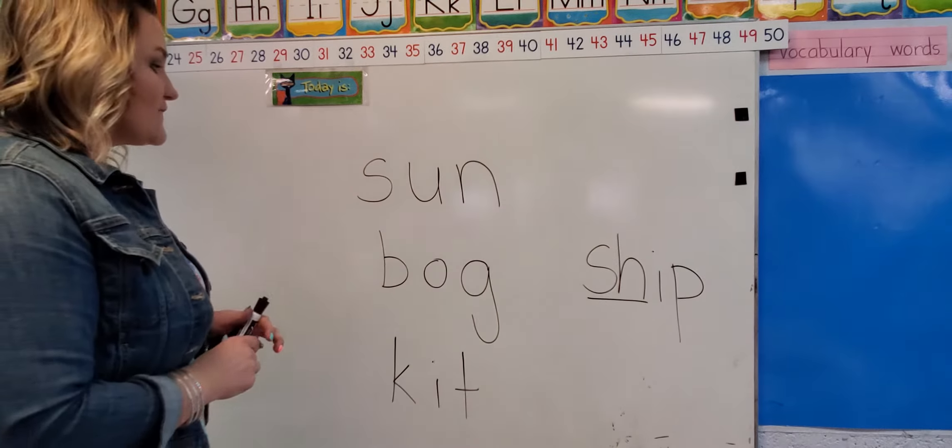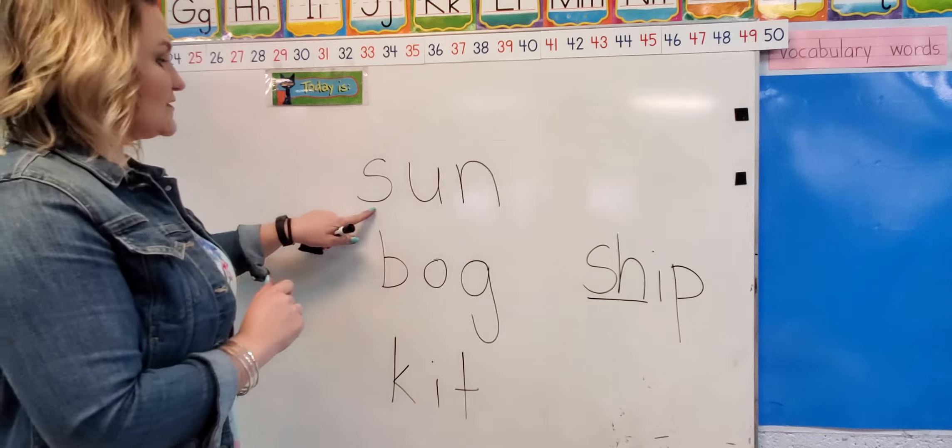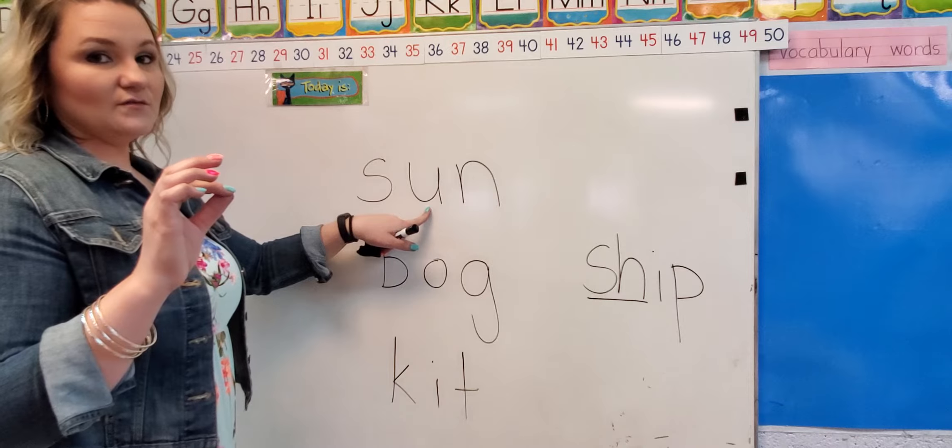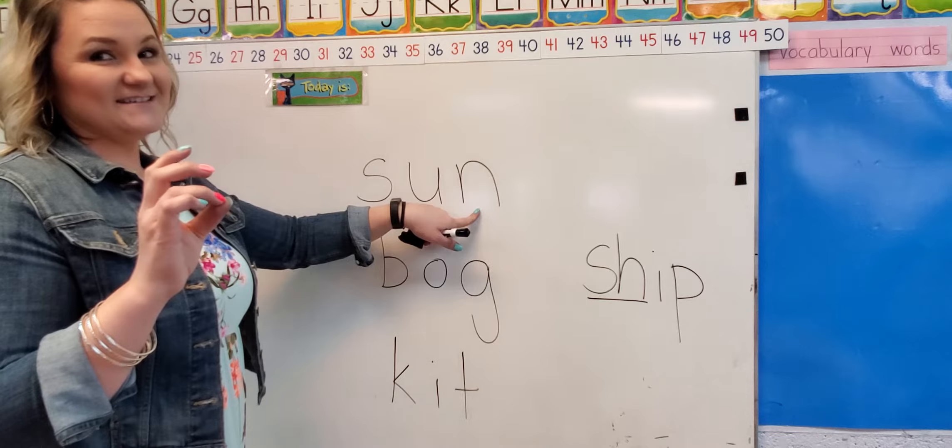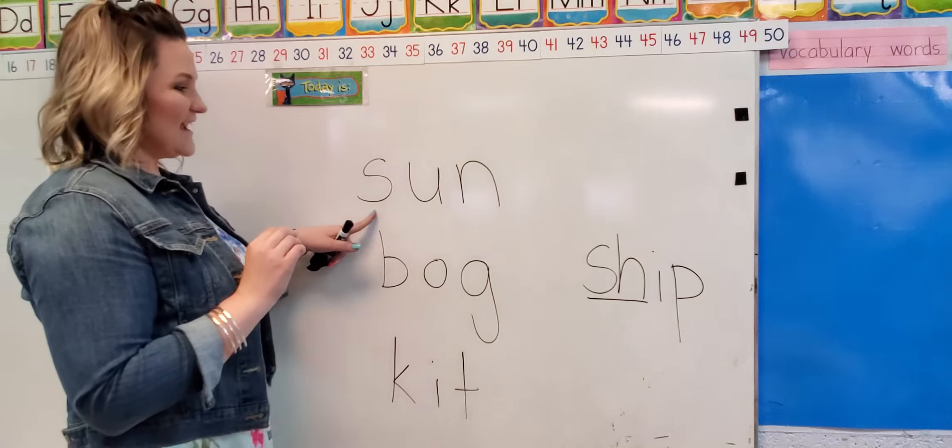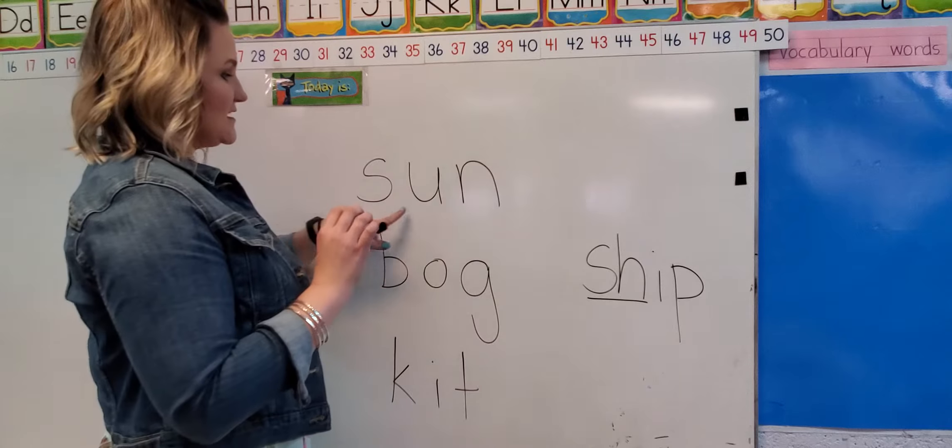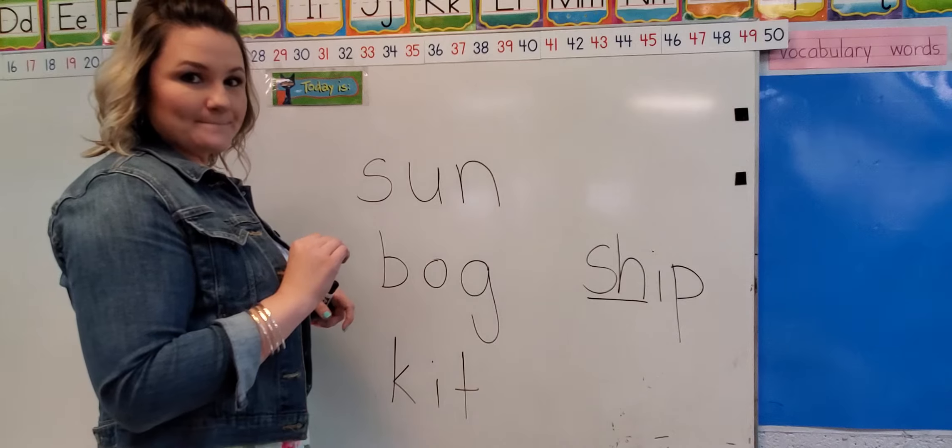So our first word is this one. Can you guys help me type this out? What sound does an S make? S, a U, and an N. N. Okay, let's blend it together. S, U, N. S, U, N. Sun. Did you guys get it? Good job.